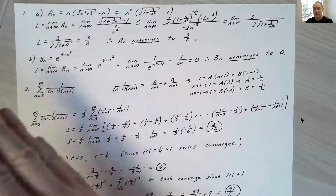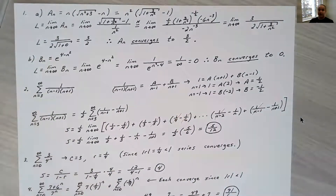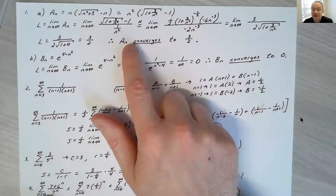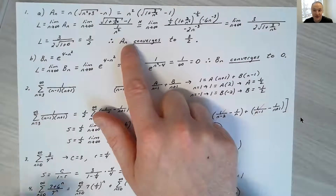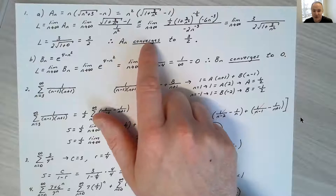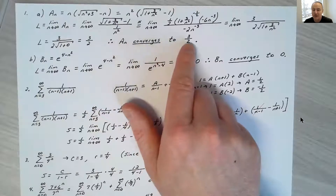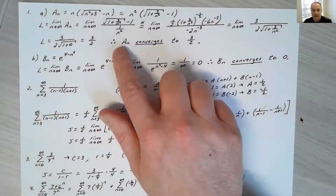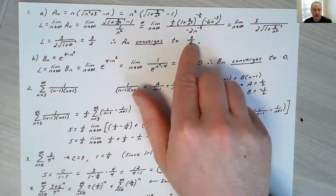Remember: if this were a series, a limit of 3/2 would mean the series does not converge. But for a sequence, we say it converges any time the limiting value goes to any finite number. So this sequence a_n converges to 3 over 2. If it were a series, it would diverge because the limiting value is not 0.